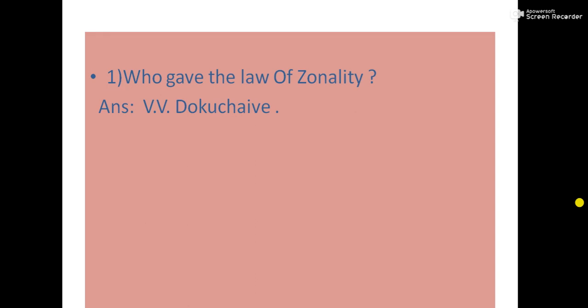And the next question is who gave the law of generality? The answer is Dokuchaev. Dokuchaev is very well known for his work on soil geography. And the next question is who used the term ontography?